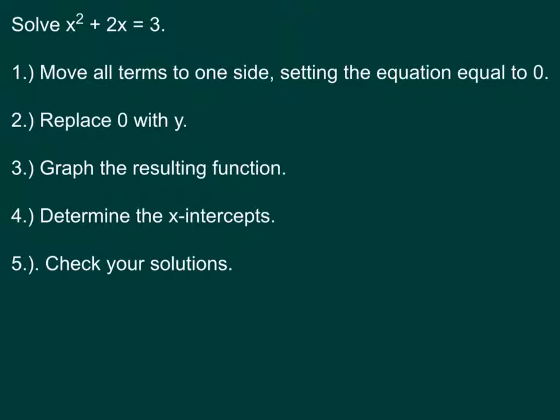With my first example here, I'm going to move everything to the left, and I will start by subtracting 3 from each side. Pay attention to the fact that there are no like terms there. So I really just have x squared plus 2x minus 3 equals 0. And now I want to replace that 0 with y. So I'm looking at x squared plus 2x minus 3 equals y. And I need to graph that function.